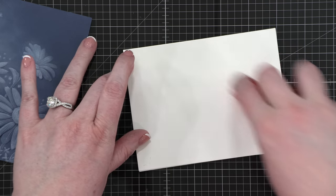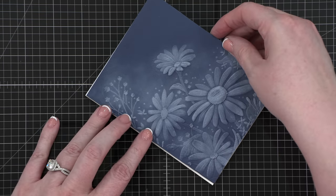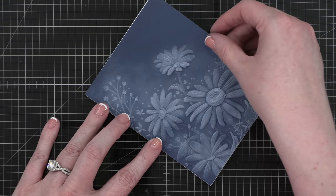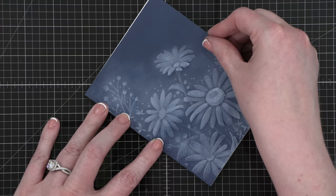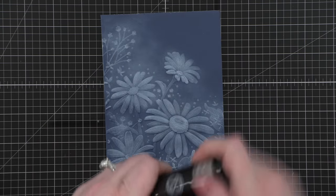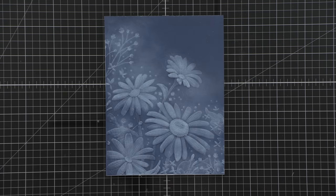So I'm adhering my embossed panel to my card base. This is a four and a quarter by five and a half inch card. My card wasn't the exact same size as my panel. I think my panel just shrunk just a tiny bit when it went through my embossing machine. So I did use a craft knife to clean up any of the white hanging out.